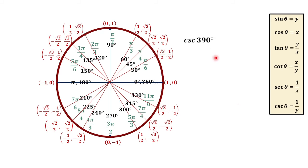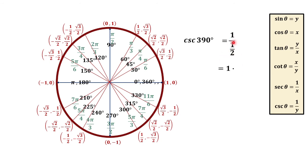For cosecant 390 degrees, 30 degrees and 390 degrees are coterminal angles. To get cosecant of 390 degrees, we use 1 over y, using the same y-coordinate as 30 degrees. So that is 1 over one-half. Multiplying by the reciprocal gives 2 over 1, and cosecant 390 degrees is equal to 2.